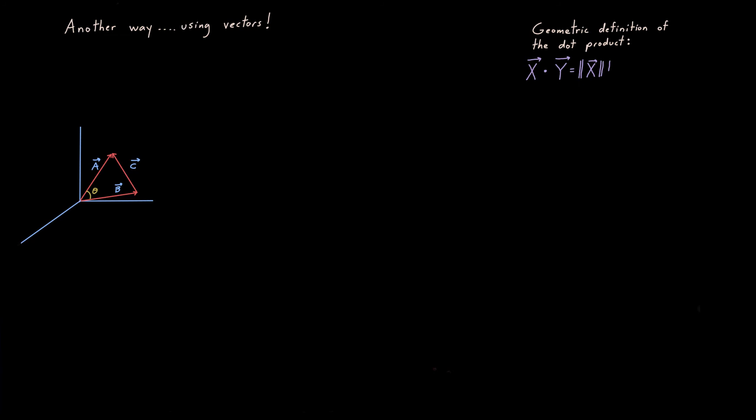Now, to do this, recall the geometric definition of the dot product. When I dot two vectors X and Y, I just take the magnitudes of each and multiply by the cosine of the angle between them. So, for example, if I apply this to the picture and dot C with itself, I get the magnitude of C times the magnitude of C times cosine of zero, because there is no angle between a vector and itself. Therefore, when I dot a vector with itself, I just get the magnitude of that vector squared.